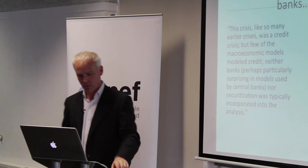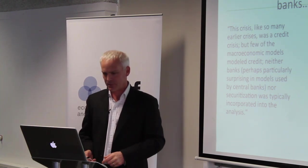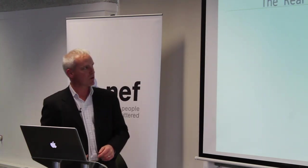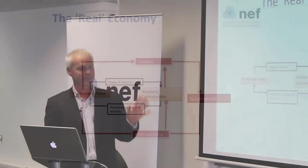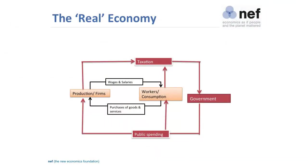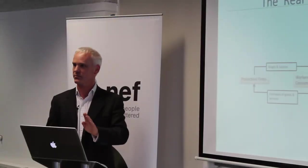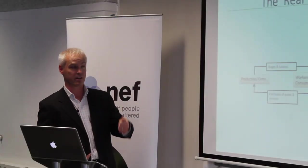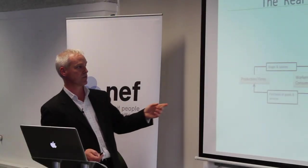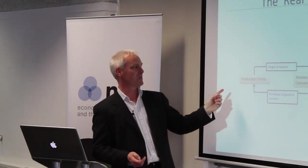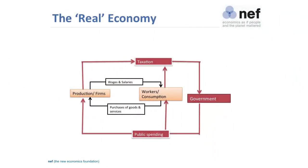So why are banks missing? Because the normal model of the real economy in standard economic modelling looks like this. It's not that you shouldn't have such models — all models can tell you something — but these models aren't very good at telling you about credit creation. It's a circular model you often get in economics textbooks: you've got firms and households, wages and salaries going to workers who consume goods and services.